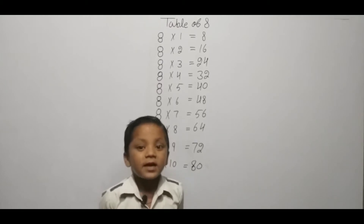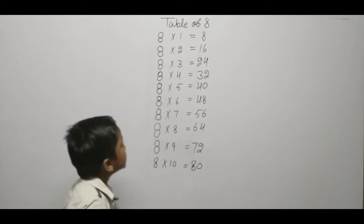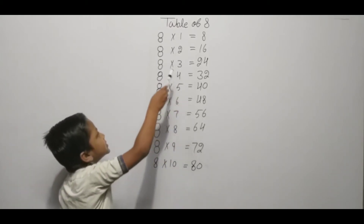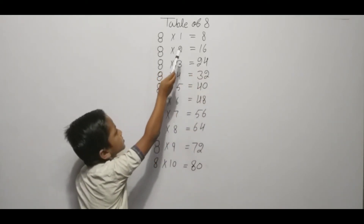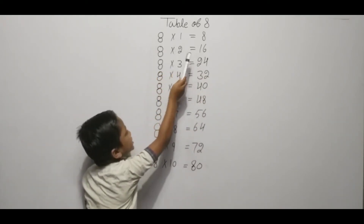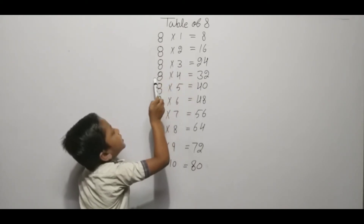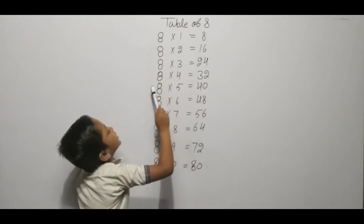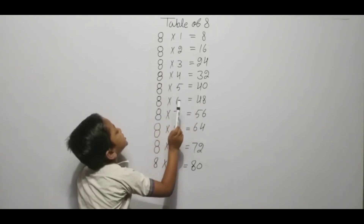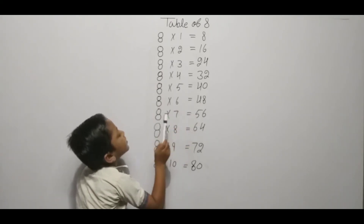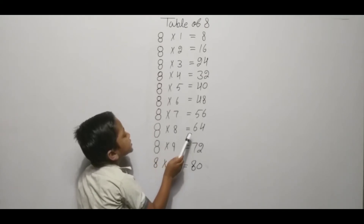Hello friends, we are learning table of eight. Eight three ja twenty-four, eight four ja thirty-two, eight five ja forty, eight six ja forty-eight, eight seven ja fifty-six, eight eight ja sixty-four.